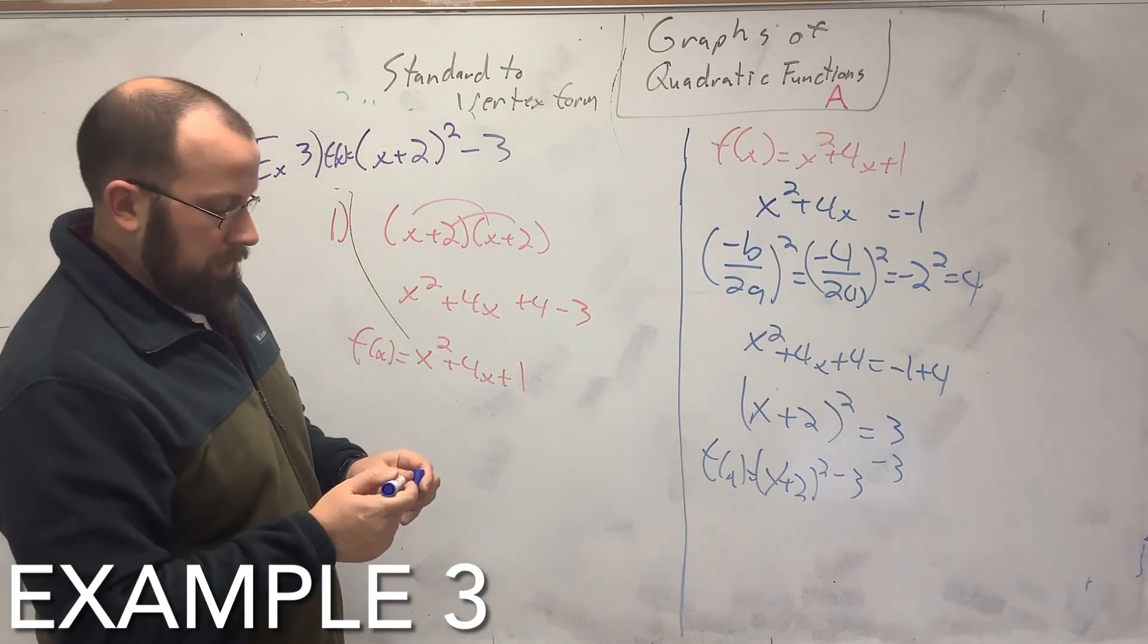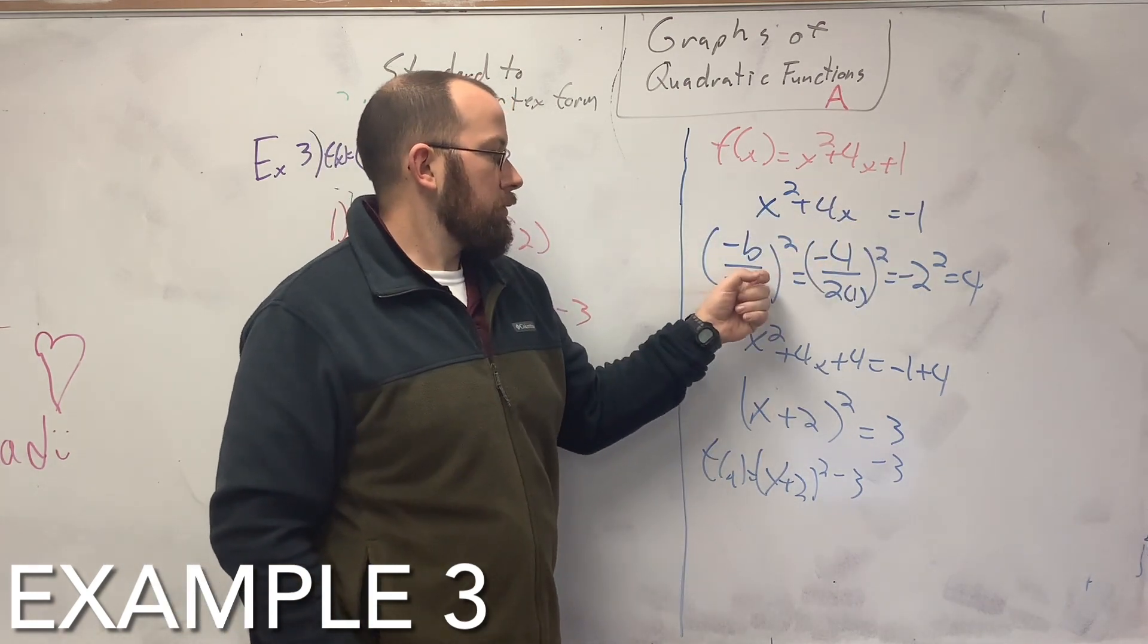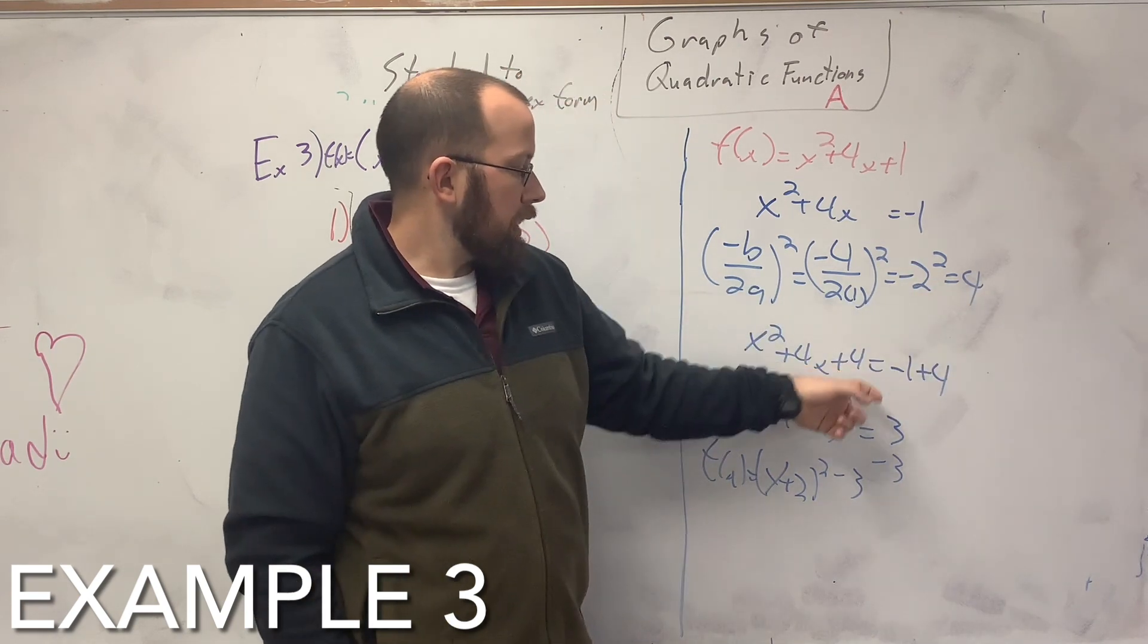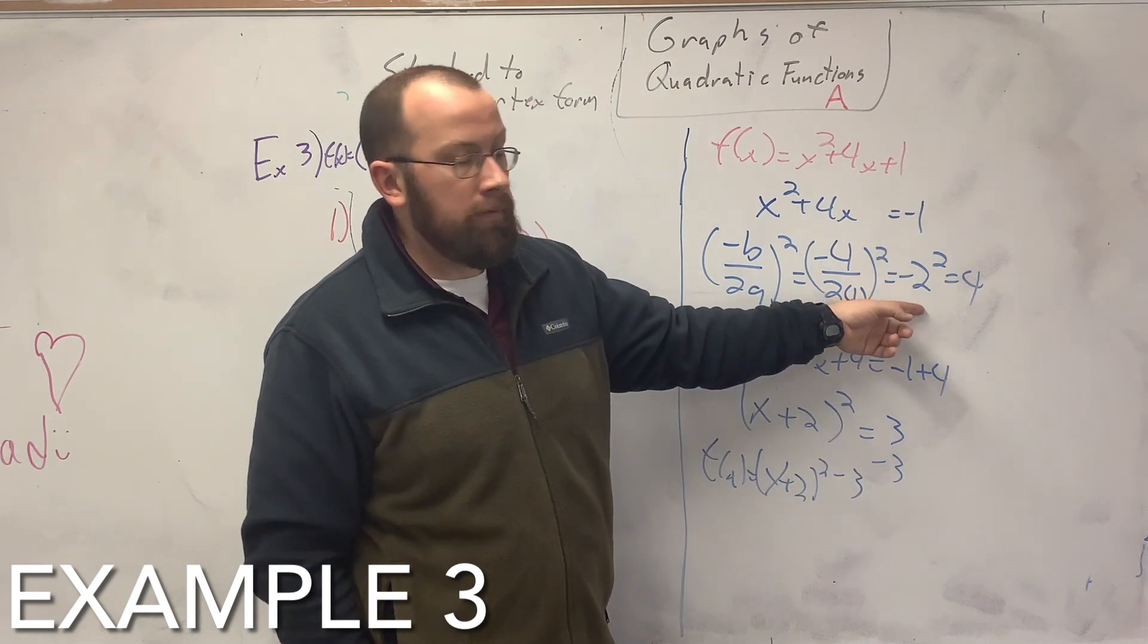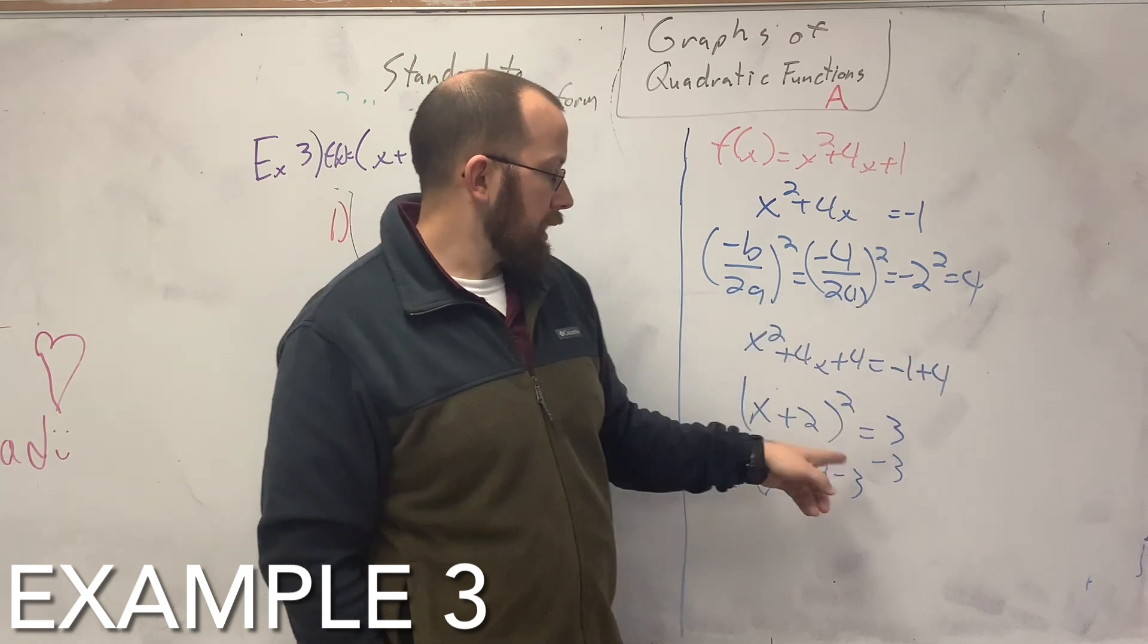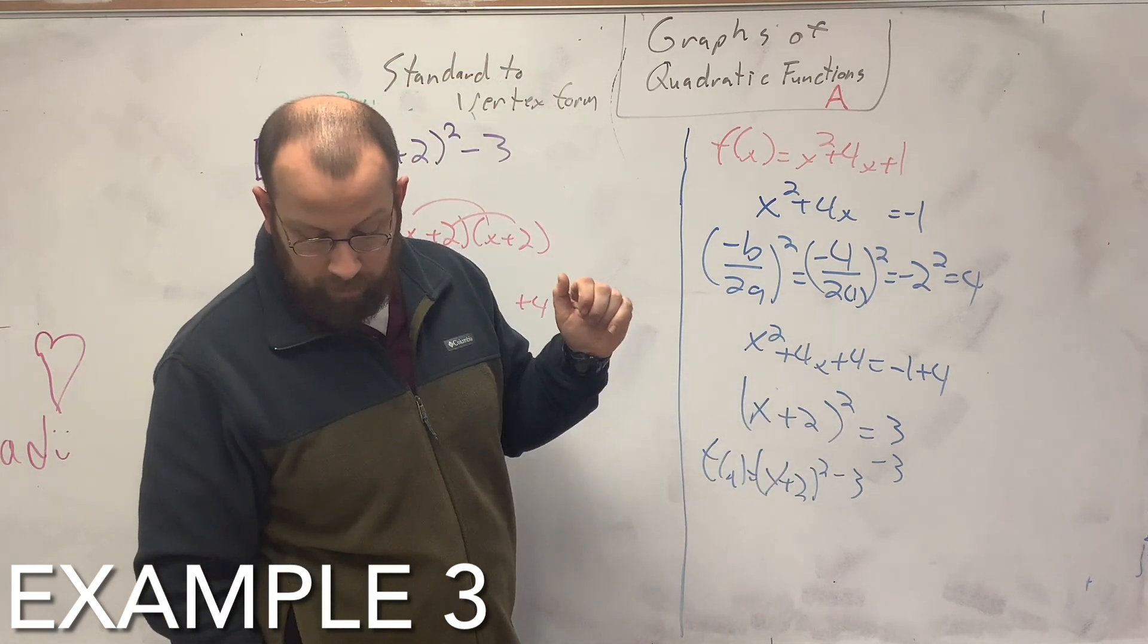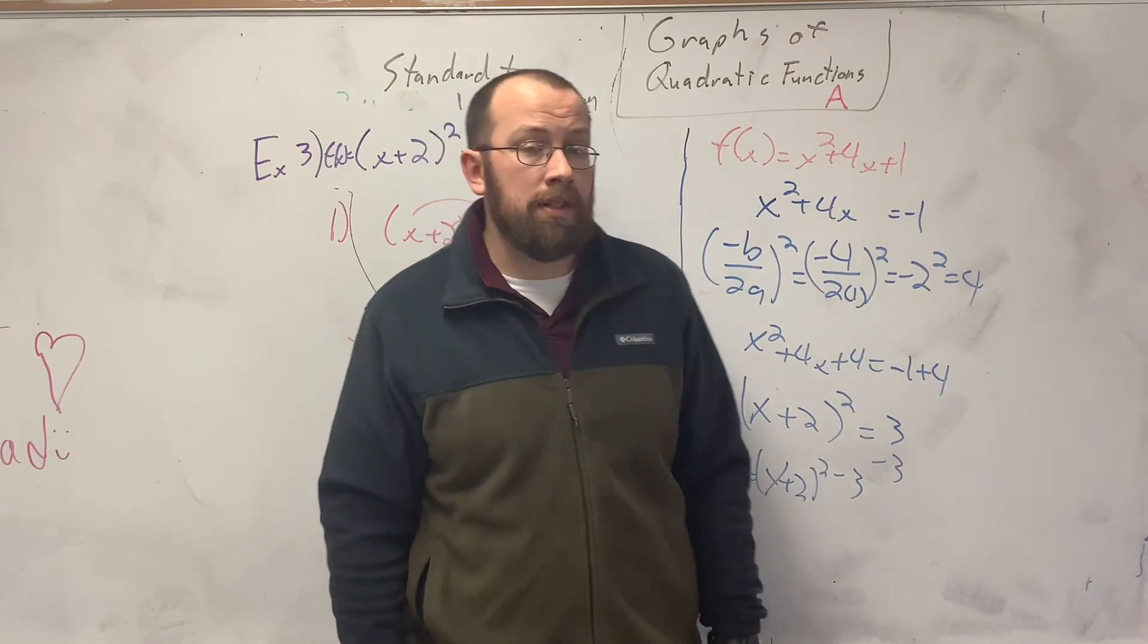So I'm going to explain the process one more time. Move the constant to the other side, use this to find the new number or complete the square or whatever, find it there. Then you break it down. So basically whatever that number is going to be without the negative sign in front of it, just square will be that number right there. And just move the number back over. It's not that hard. This has been graphs of quadratic functions A. Hope it helped.